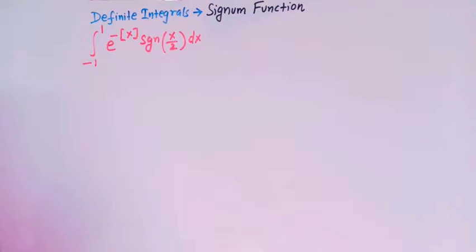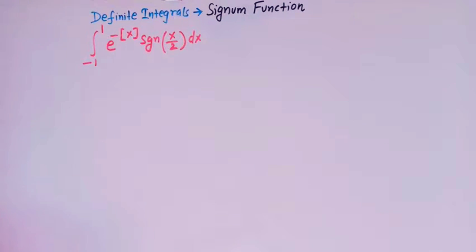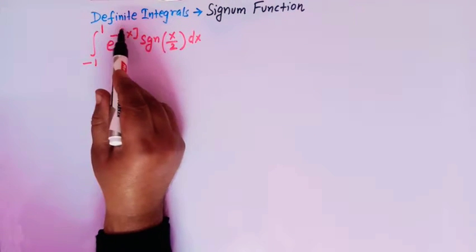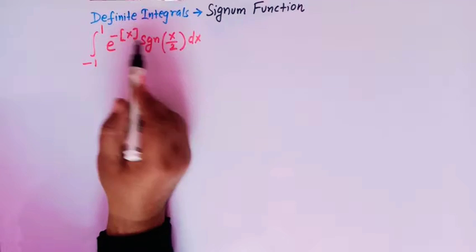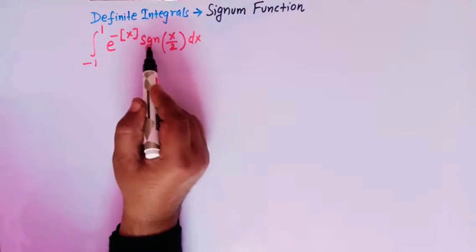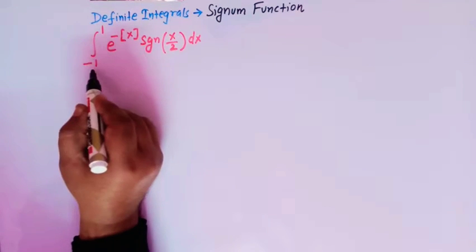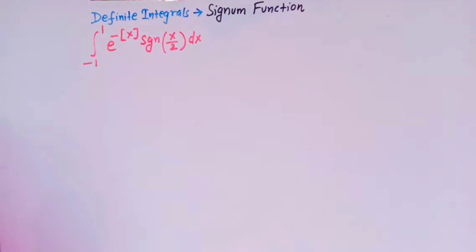Hello viewers. In today's class, we are going to solve one important conceptual problem from definite integrals. We have to integrate e raised to minus greatest integer of x and the signum function of x over 2, and the limits are from minus 1 to 1.